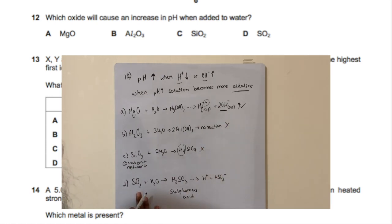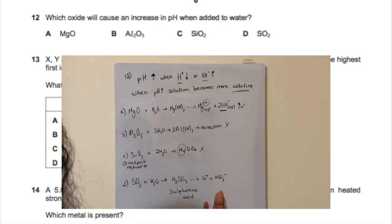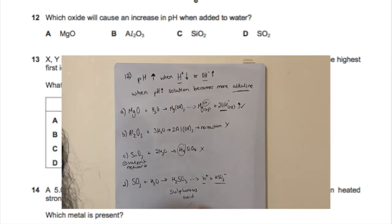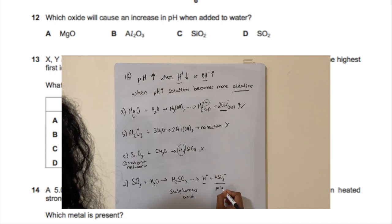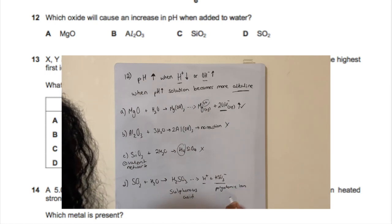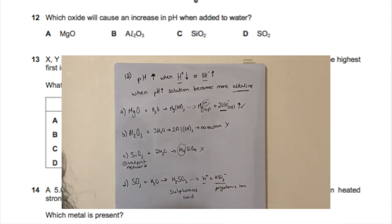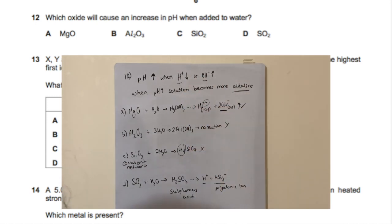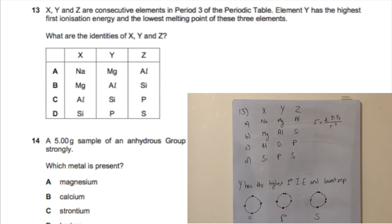For option D, sulfur dioxide reacted with water gives sulfurous acid, which dissociates to produce H⁺ ions and a polyatomic ion. That increases H⁺, which we don't want. So the only oxide that raises pH by increasing OH⁻ is A — magnesium oxide.